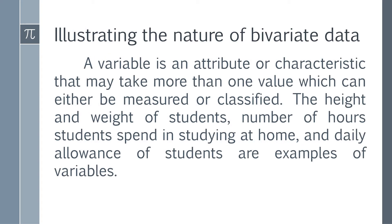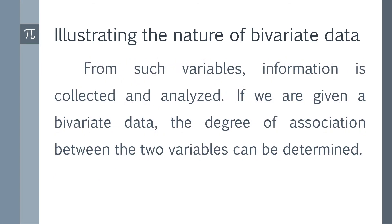Illustrating the nature of bivariate data: a variable is an attribute or characteristic that may take more than one value, which can be measured or classified. The height and weight of students, number of hours students spend studying at home, and daily allowance of students are examples of variables. From such variables, information is collected and analyzed.